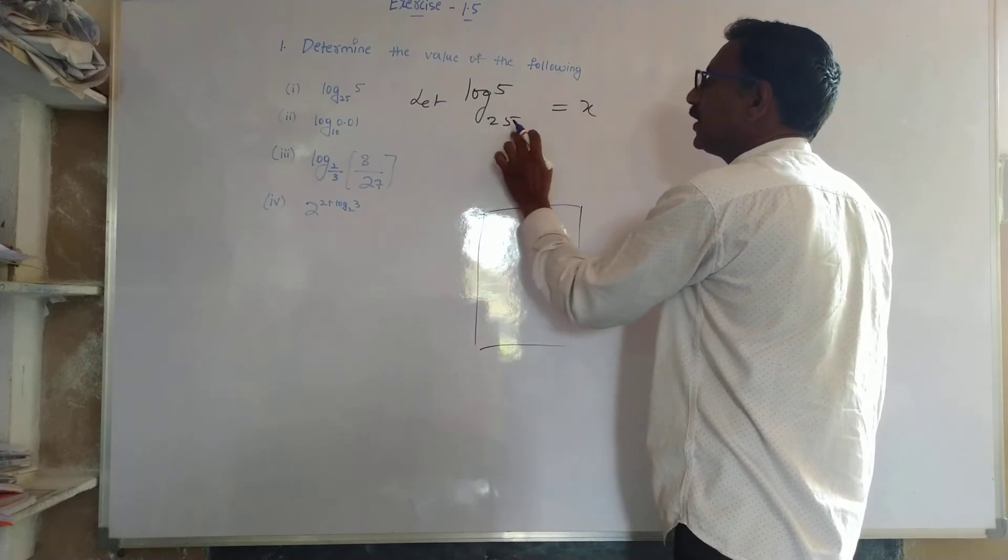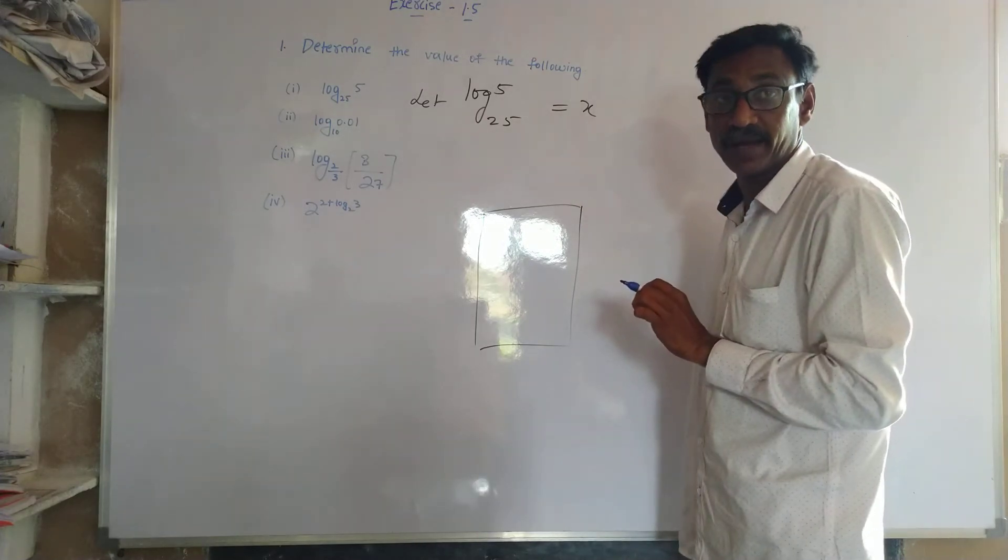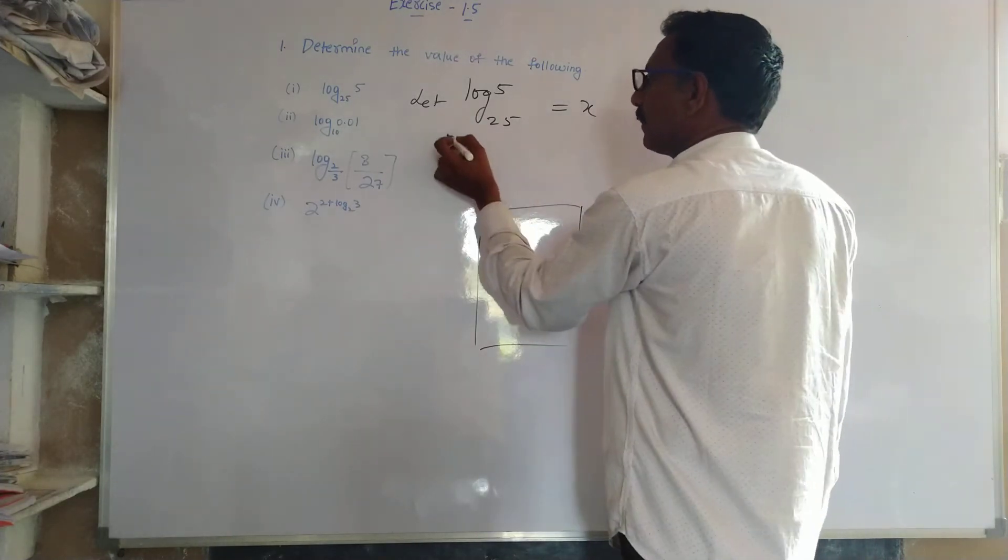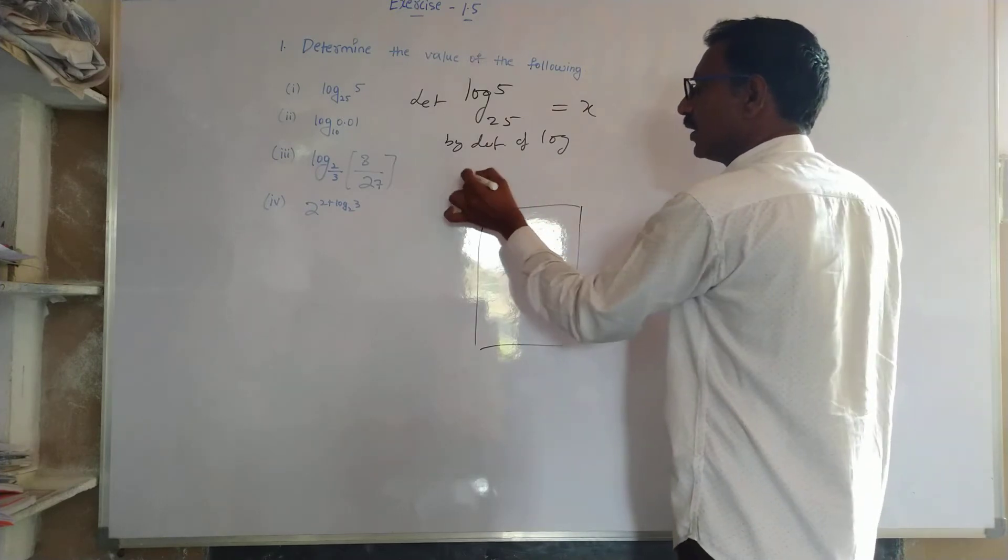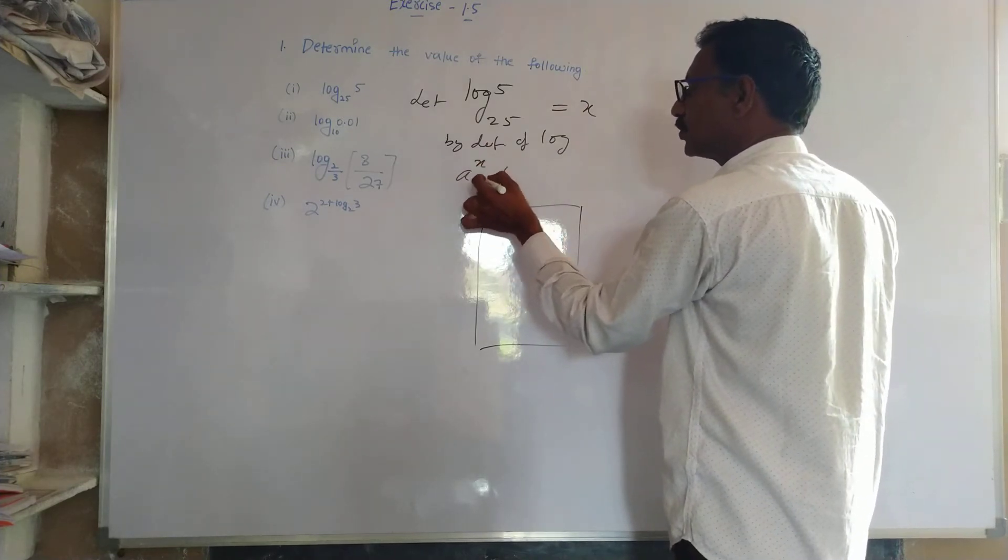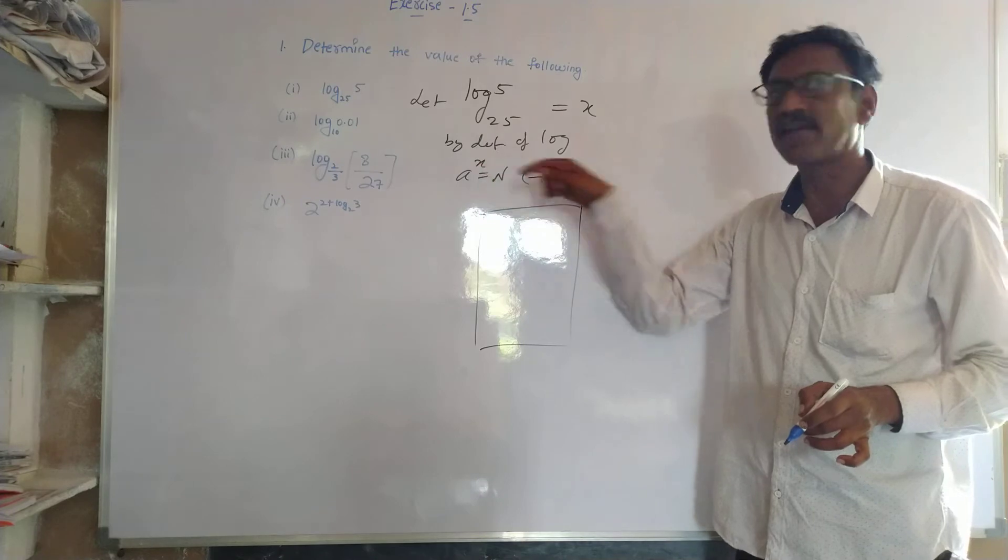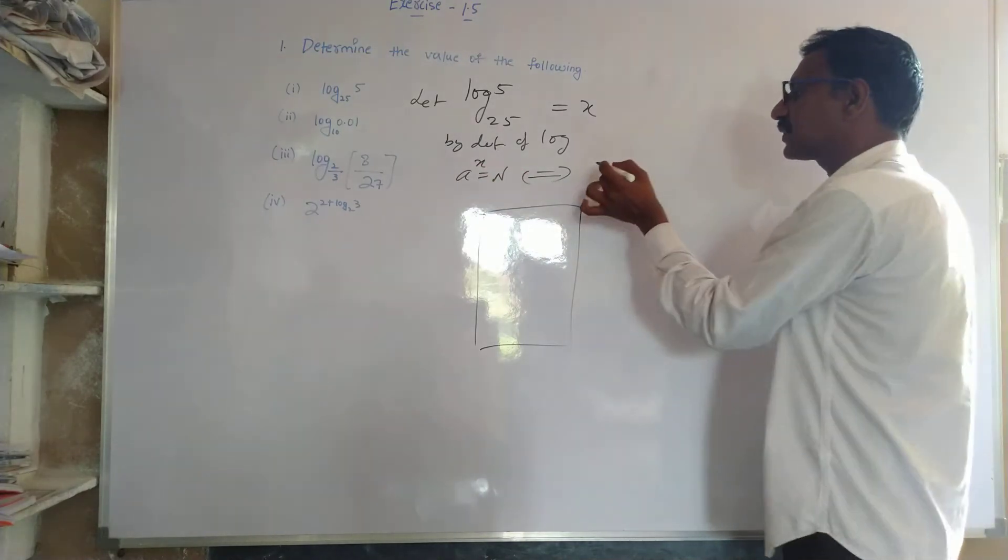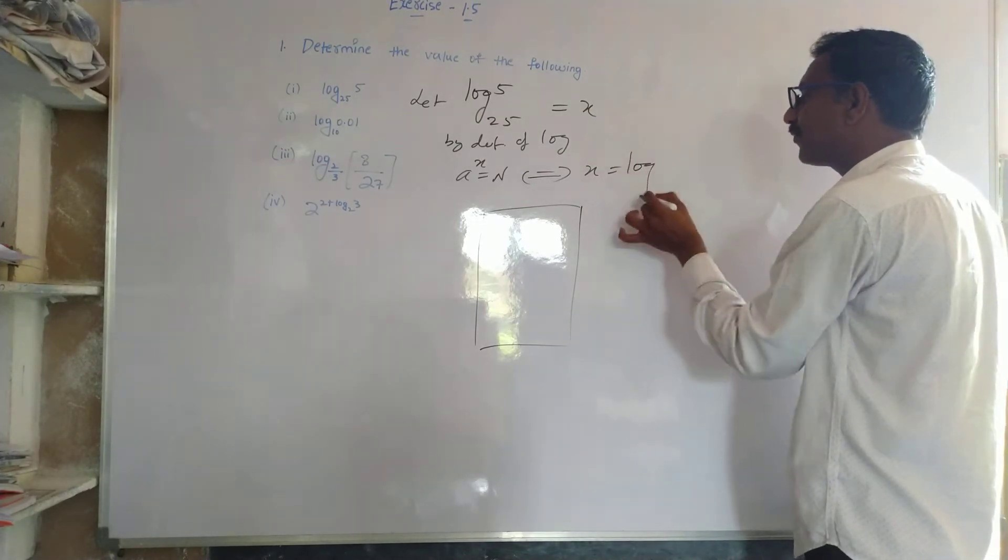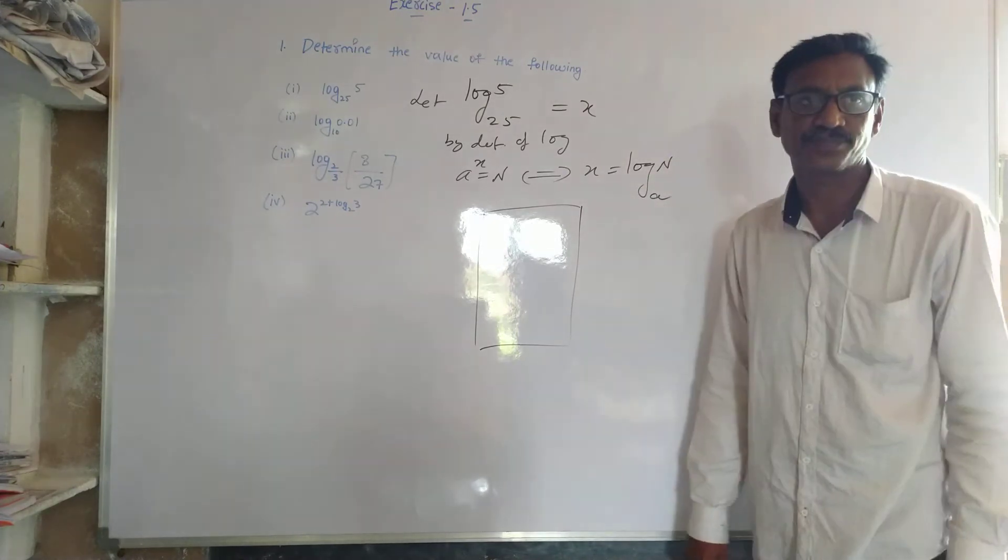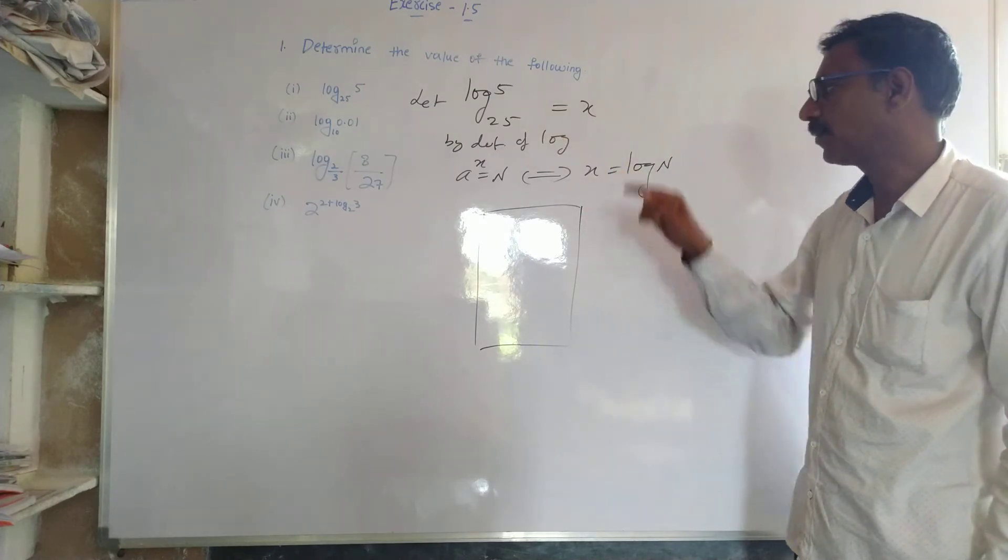If we have power and base, this base power is higher by definition of logarithm. By definition of logarithm, a power x is equal to n if and only if, what do you say? A power x is equal to n and x is written as logarithm of n to the base a. This is my response. So by definition of logarithm, 25 to the power x is higher.